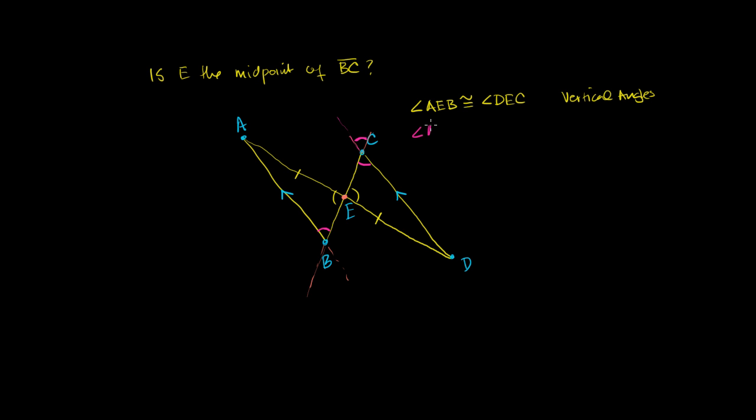Angle ABE is going to be congruent to angle DCE. It's congruent to angle DCE. And we could say because it's alternate interior angles. I'll just write a little code here. So alternate interior angles.